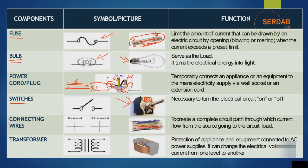Next, we have switches. This is how a physical switch looks, and this is the electrical symbol. Switches are necessary to turn an electrical circuit on or off. We also have connecting wires, which come in many shapes. In circuit diagrams, if there is a dot between two wires it means they are connected, and if there is a bridge symbol it means they are not connected. Wires create a complete circuit path through which current flows from the source to the load.